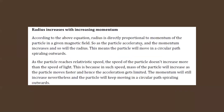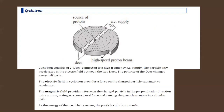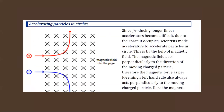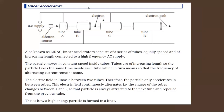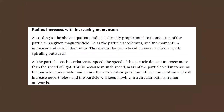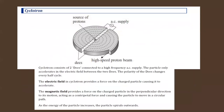Another type of particle accelerator is the cyclotron. In a cyclotron we use both electric field and magnetic field. In a LINAC we only use electric field to accelerate, and a LINAC must be several kilometers long to accelerate particles to high energies. The advantage of the cyclotron is that the magnetic field causes the particle to travel a greater distance in a circular path.